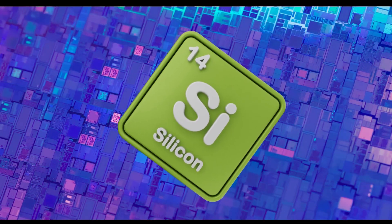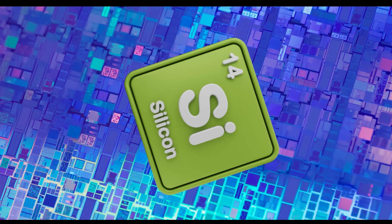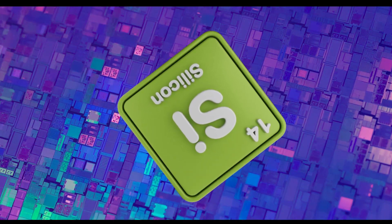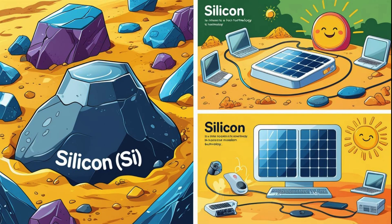Fourteen. Silicon. Silicon is found in sand and rocks. It's super important for making computer chips the brains of computers and smartphones. Without silicon, our digital world wouldn't exist.